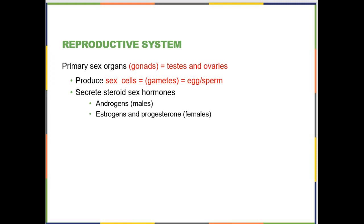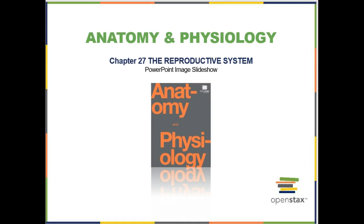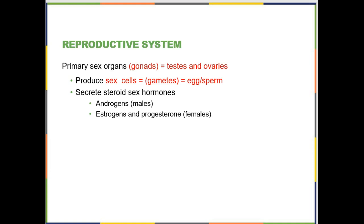Welcome to the reproductive system screencast. This will most likely get divided up into two videos. We are going to start by defining some terms. The primary sex organs — the origin of the reproductive cells — are the gonads: testes in males, ovaries in females. These organs produce the sex cells, which we call gametes: eggs in females, sperm in males. The gonads also produce gonadal hormones — testosterone in males, and estrogen and progesterone in females.